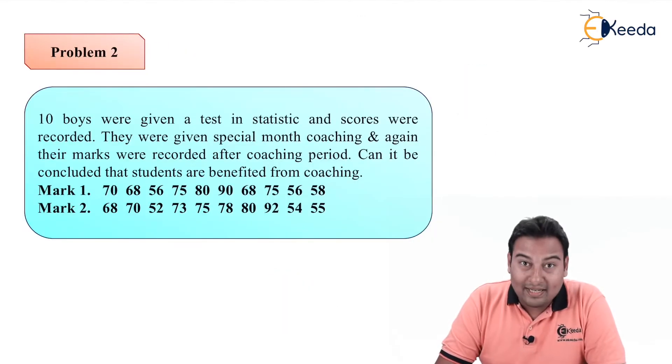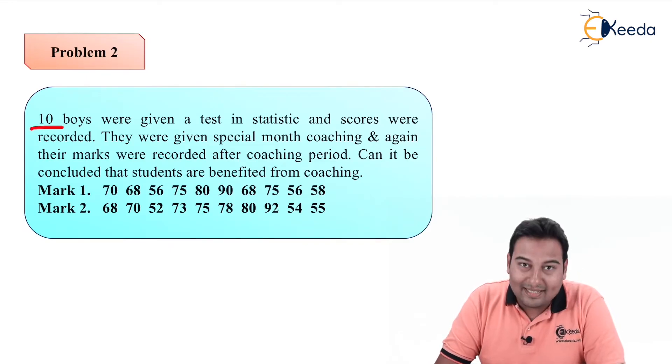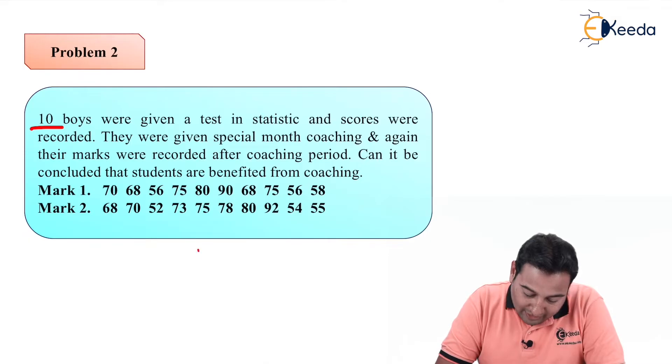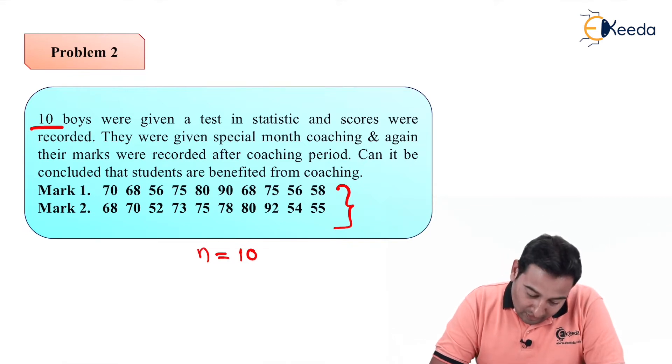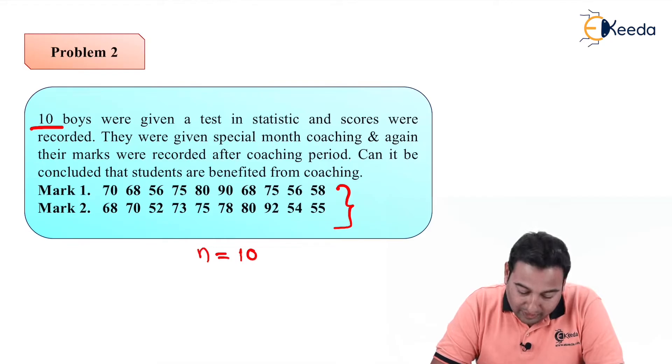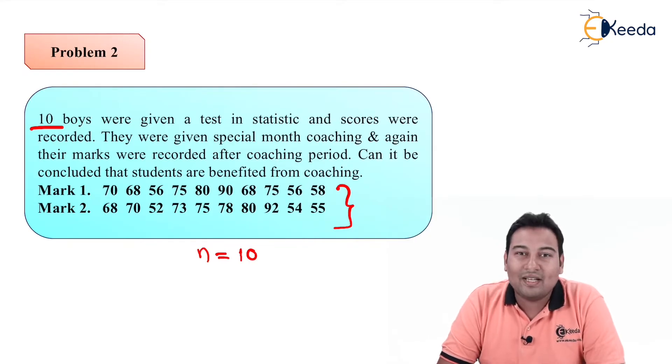Let's have a look at the given problem. 10 boys were given a test in statistics, so n equals 10, indicating a small sample test. The data is given as marks 1 and marks 2. They were given a test and their scores were recorded. They were given special month coaching and again their marks were recorded after the coaching period.